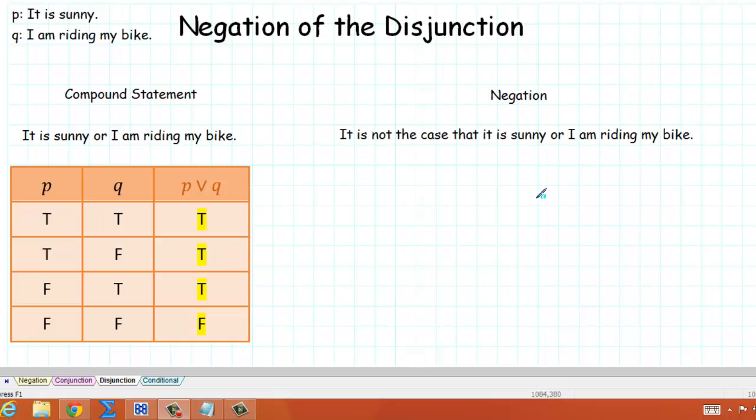One way we can figure that out is by looking at this truth table where P or Q is false. And what we see is that P or Q is false occurs precisely when P is false and Q is false. In other words, exactly when it is not sunny and I am not riding my bike. And that is the negation. The negation is: it is not sunny and I am not riding my bike.